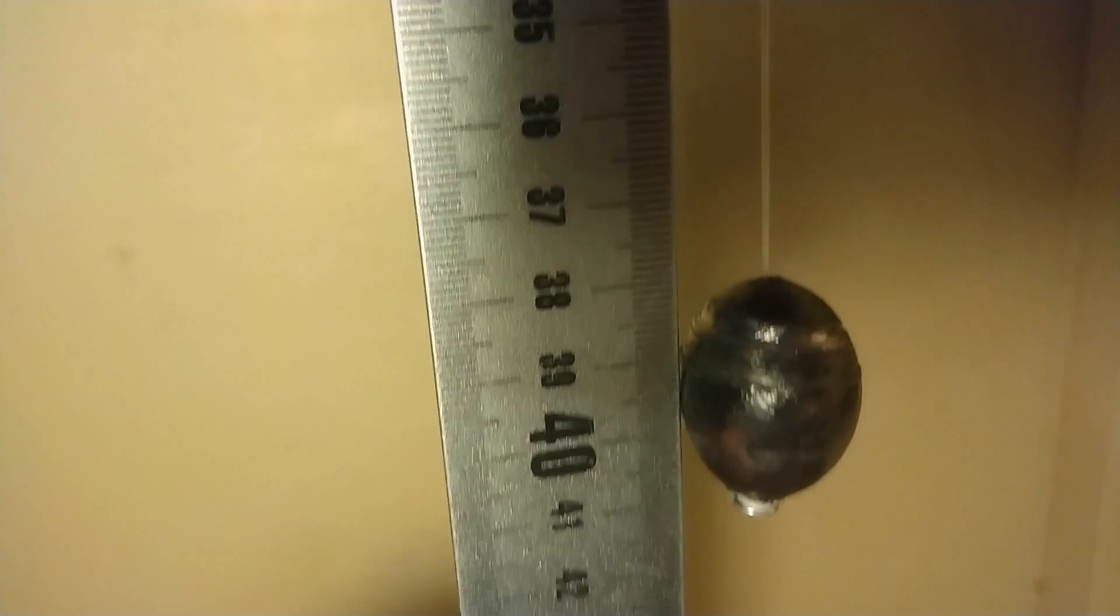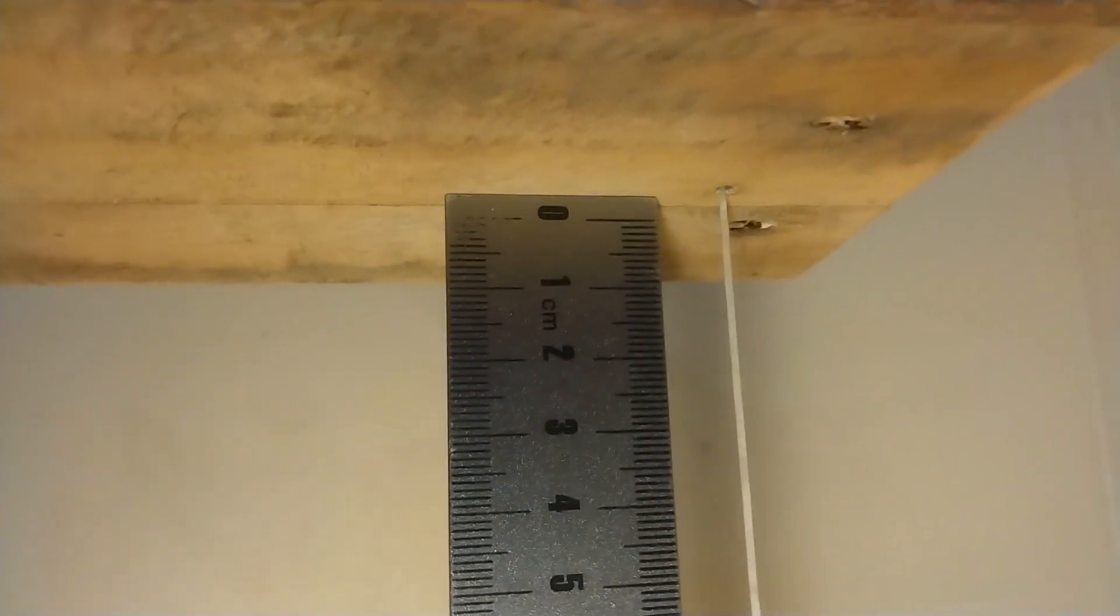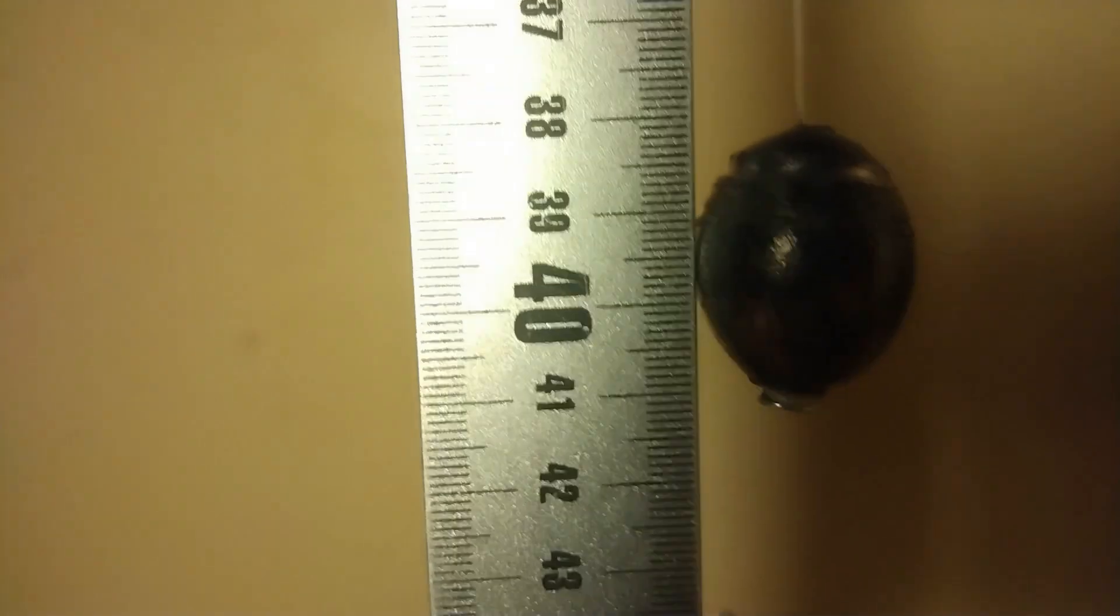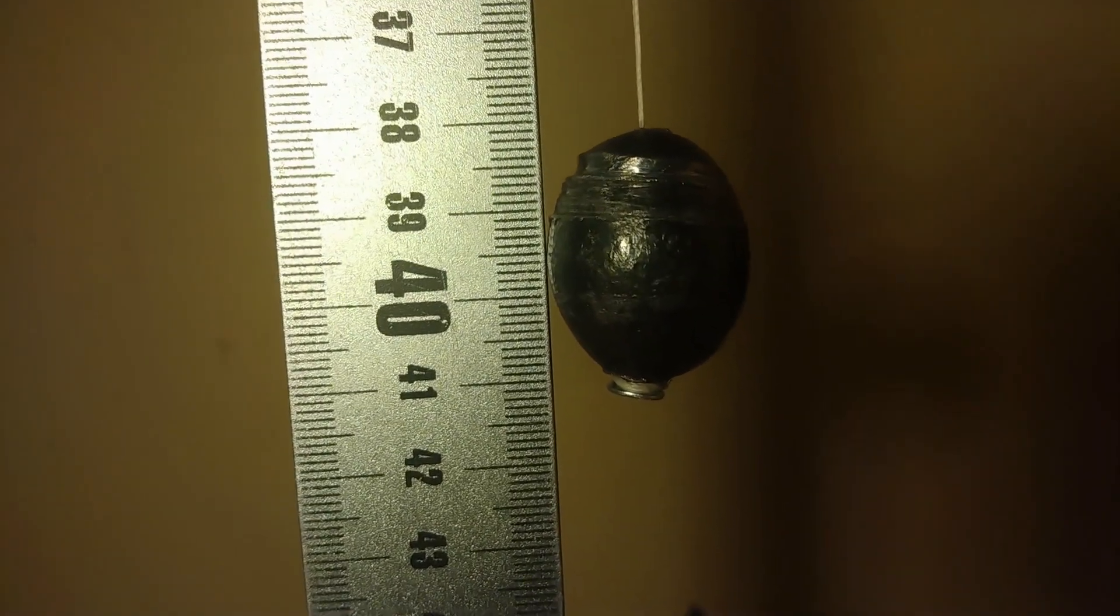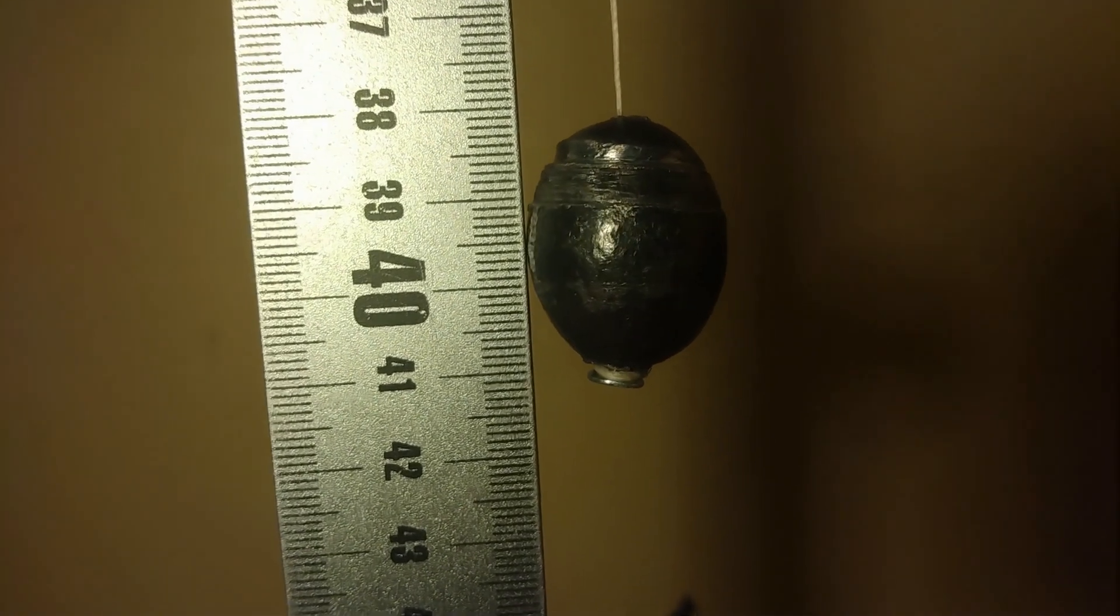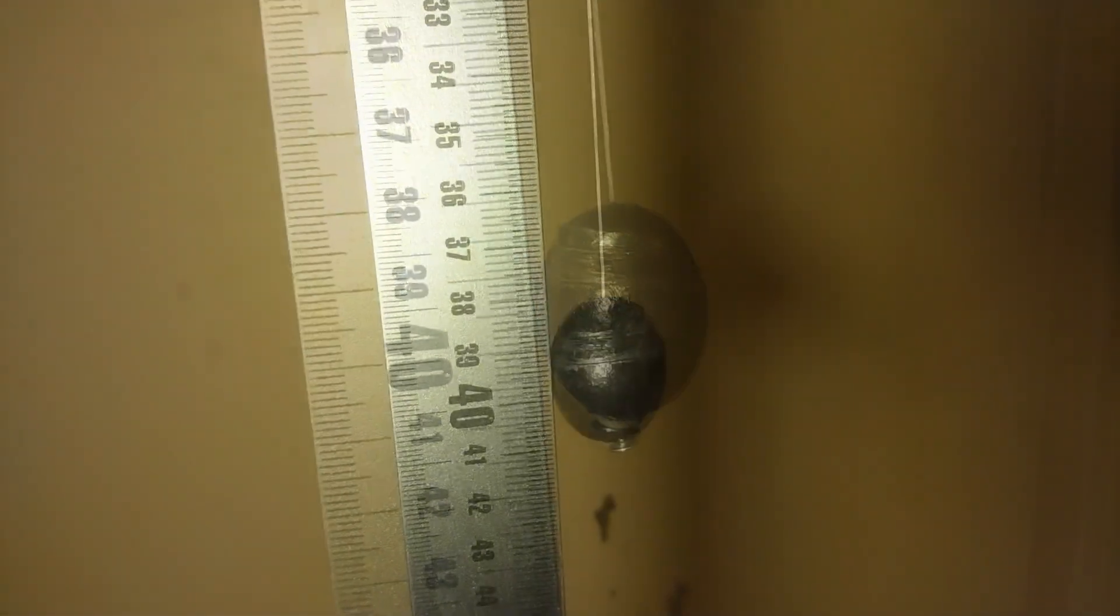Alright, so let us measure the longest string length. I'm putting my ruler against the board and I take into account that there is a three millimeter gap between the board and the zero mark on the ruler. I measure the distance to the center of the ball to be 39.7 centimeters plus the three millimeters, that makes 40 centimeters.